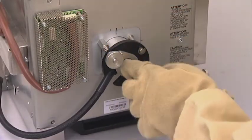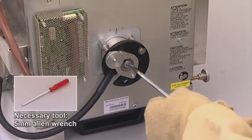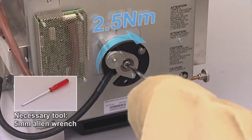Fasten the cathode side of the lamp. Tighten the screw to 2.5 Nm.